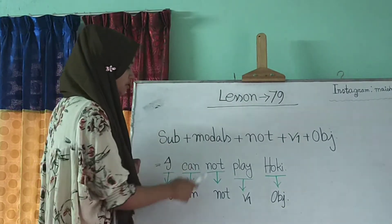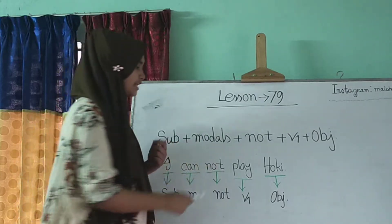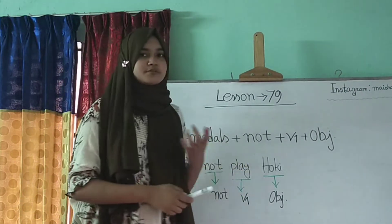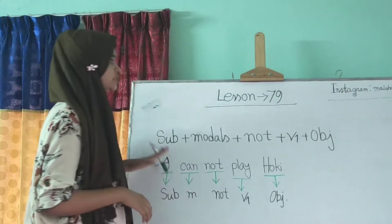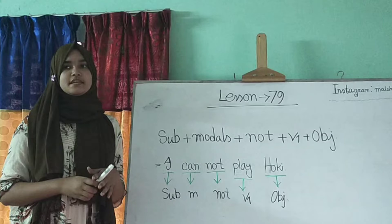So here I is subject. Can is model one and not is not. And then play verb one. That means verbs based form or the basic form. And then hockey. So think you all have understand how to make sentences with this one.